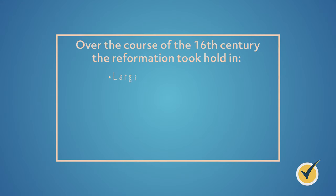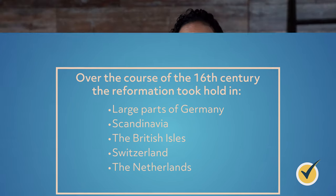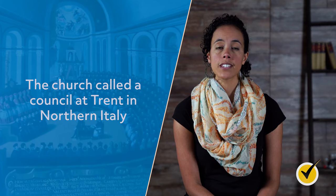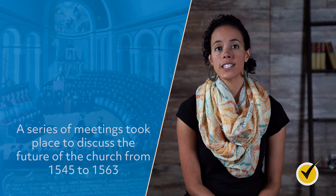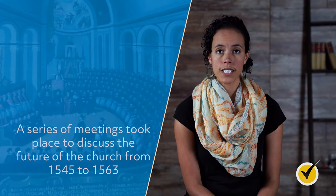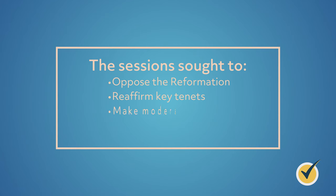The Reformation took hold in large parts of Germany, Scandinavia, the British Isles, Switzerland, and the Netherlands over the course of the 16th century. Alarmed by these developments but divided in opinion over what to do, the Church eventually called a council in 1545 at Trent in northern Italy. A series of meetings took place to discuss the future of the Church over several years, from 1545 to 1563. The sessions sought to oppose the Reformation and reaffirm key tenets of Catholic doctrine, such as the veneration of Mary and the celibacy of the clergy, but also looked to make moderate reforms to prevent abuses of power.